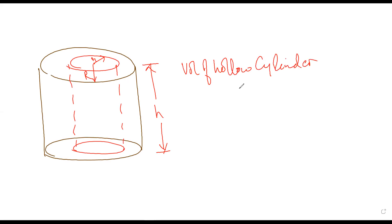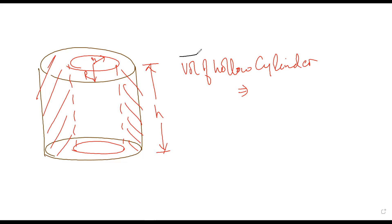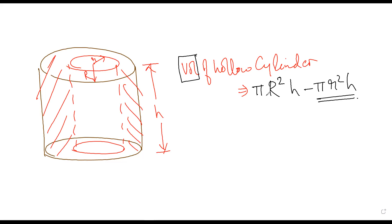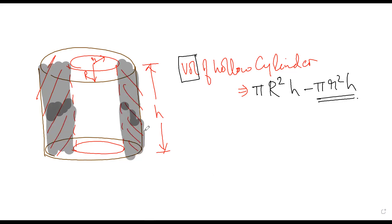What will be the volume of a hollow cylinder like this? First we will find the volume of the whole cylinder and then we will find out the volume of the inner cylinder. So you will have to find the volume of the full cylinder and subtract the portion that you have removed. Have you understood? Yes. So this is the volume.